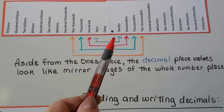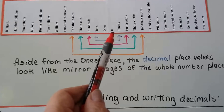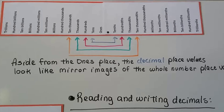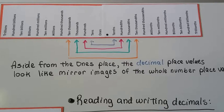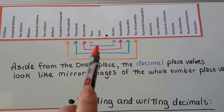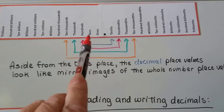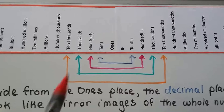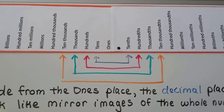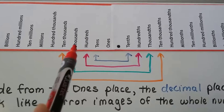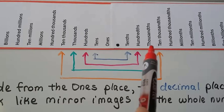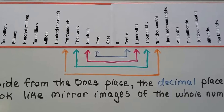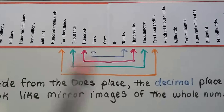Now we're going to be working on the right side of this decimal point. Aside from the ones place, the decimal place values look like mirror images of the whole number place values. So not counting the ones place, we have tens, but then we have tenths. We have hundreds, and then we have hundredths. We have thousands, and there's thousandths. Ten thousands, ten thousandths. And it just continues on going back and forth.